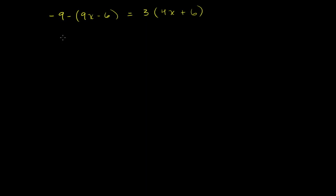We have the equation: negative 9 minus this whole expression, 9x minus 6 — this whole thing is being subtracted from negative 9 — is equal to 3 times this whole expression, 4x plus 6.